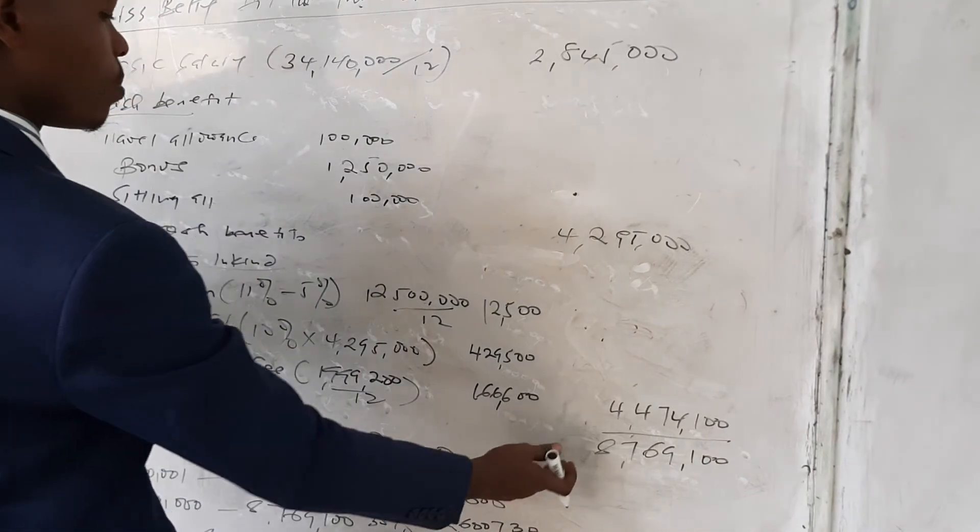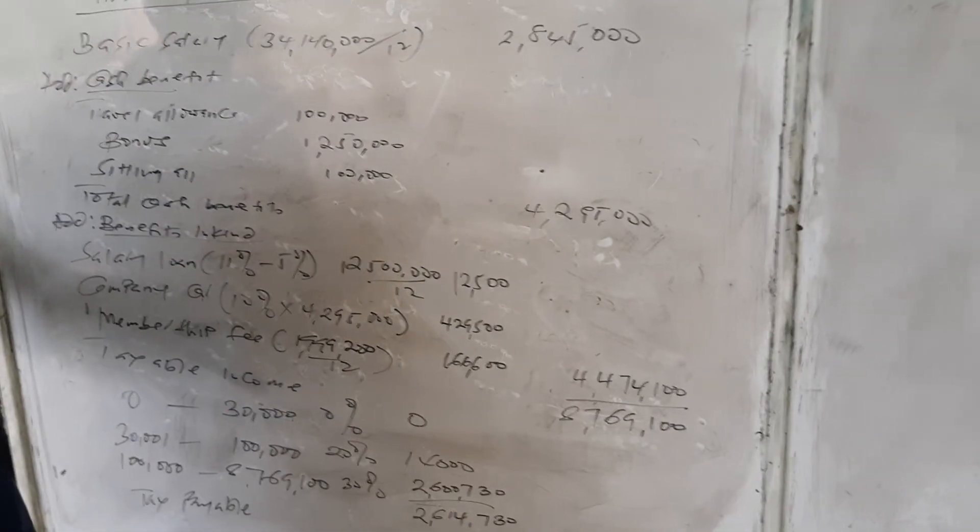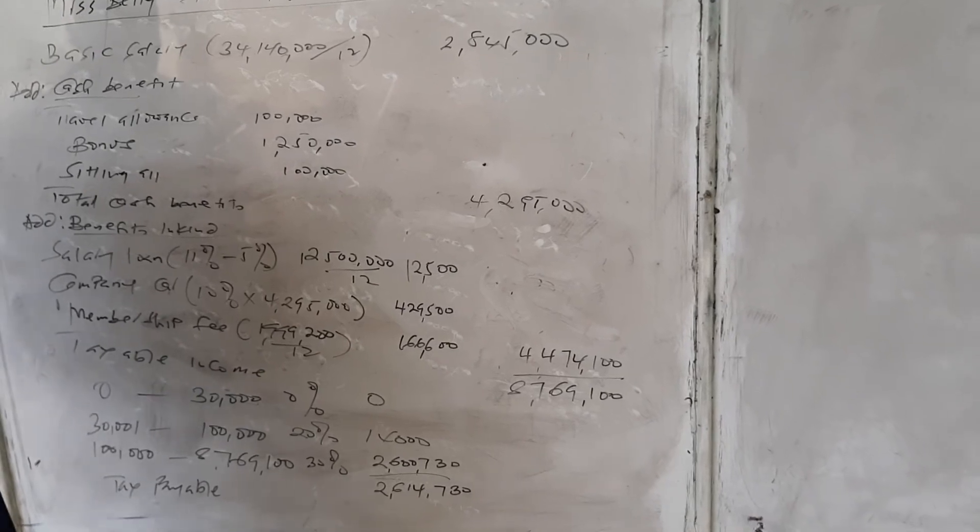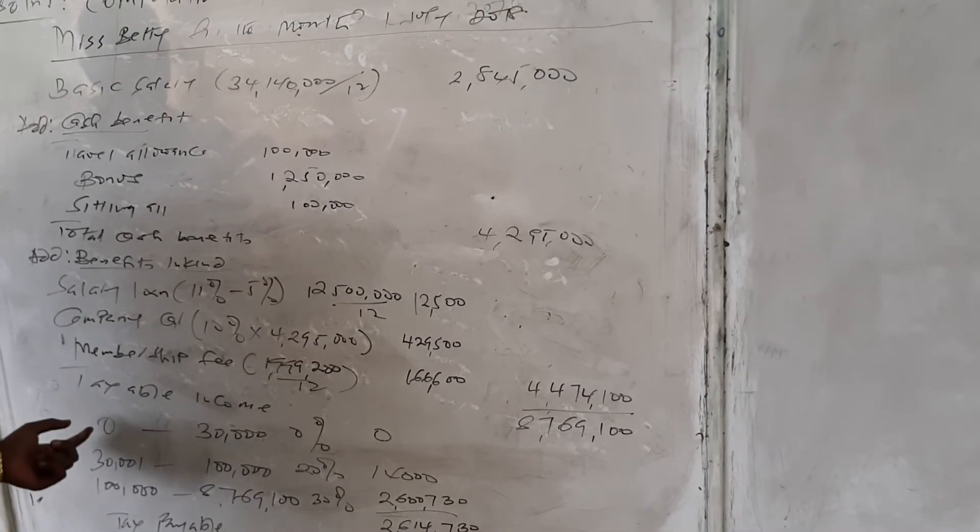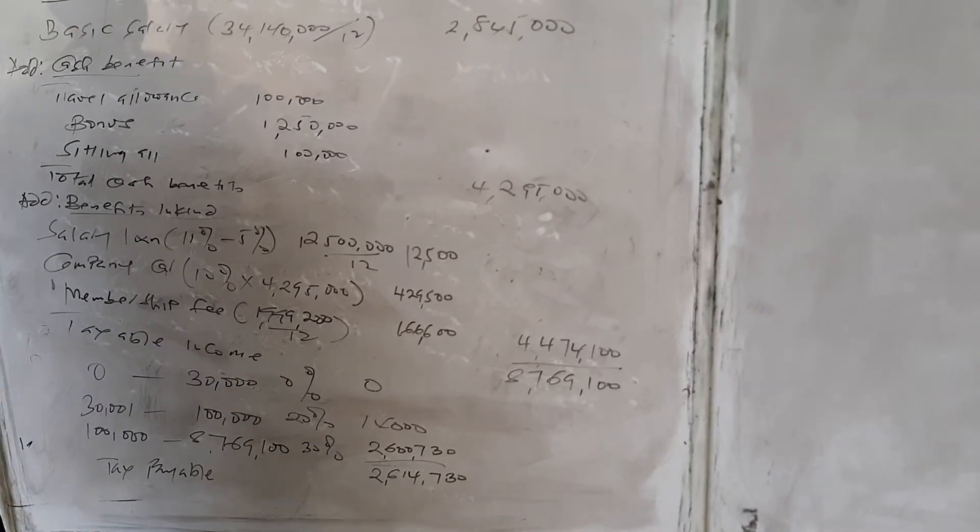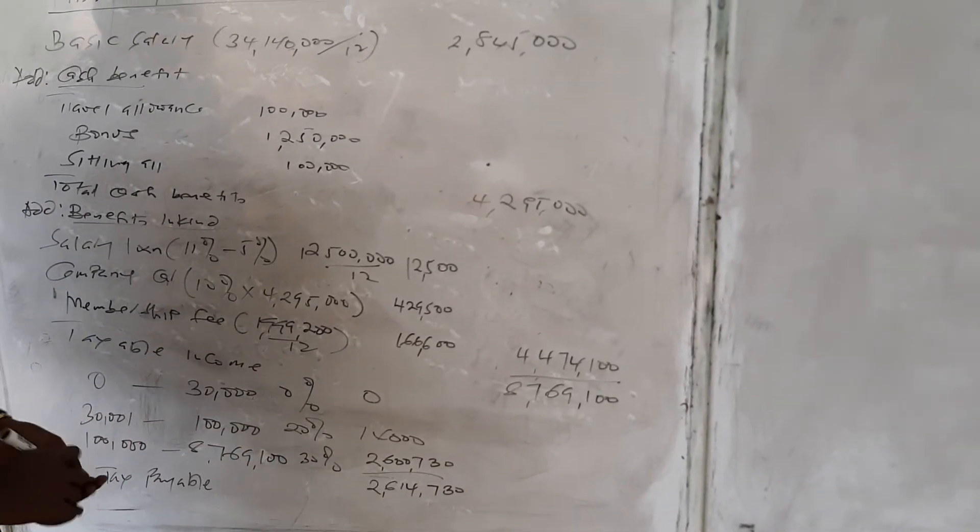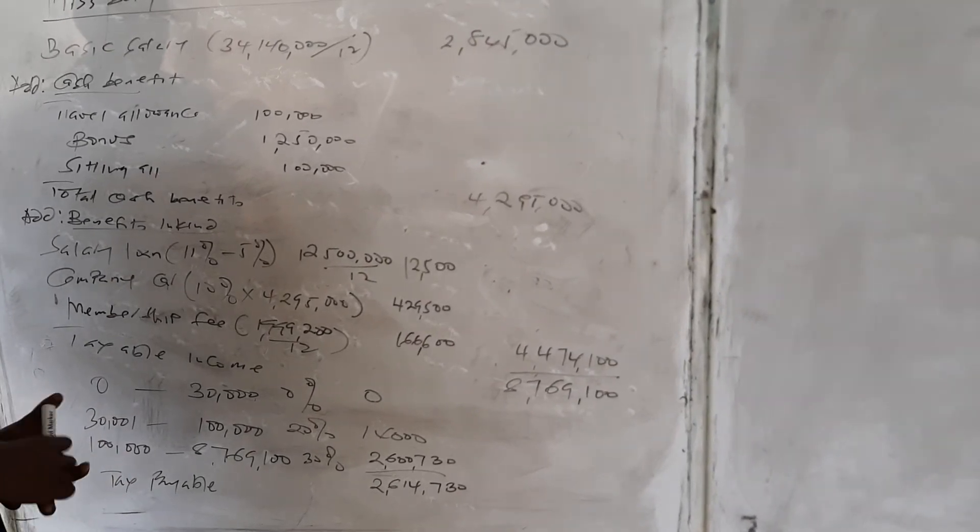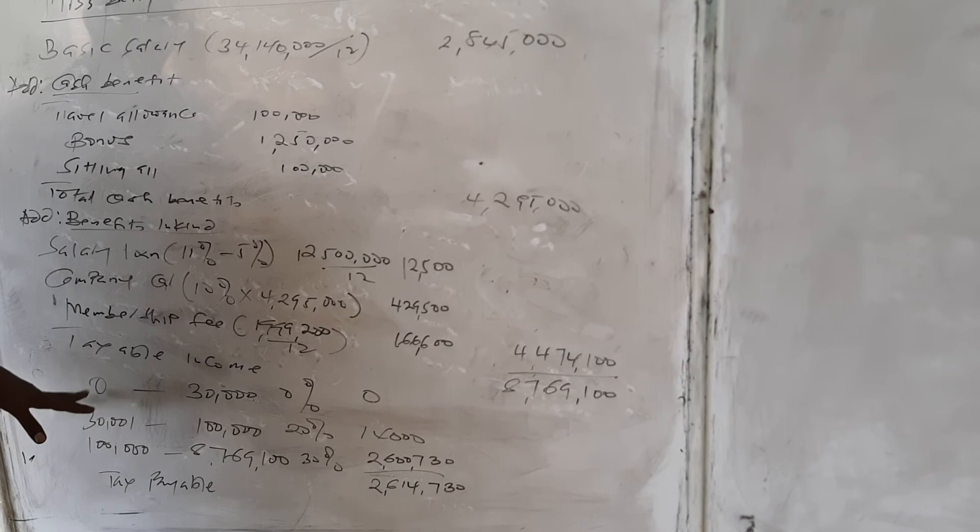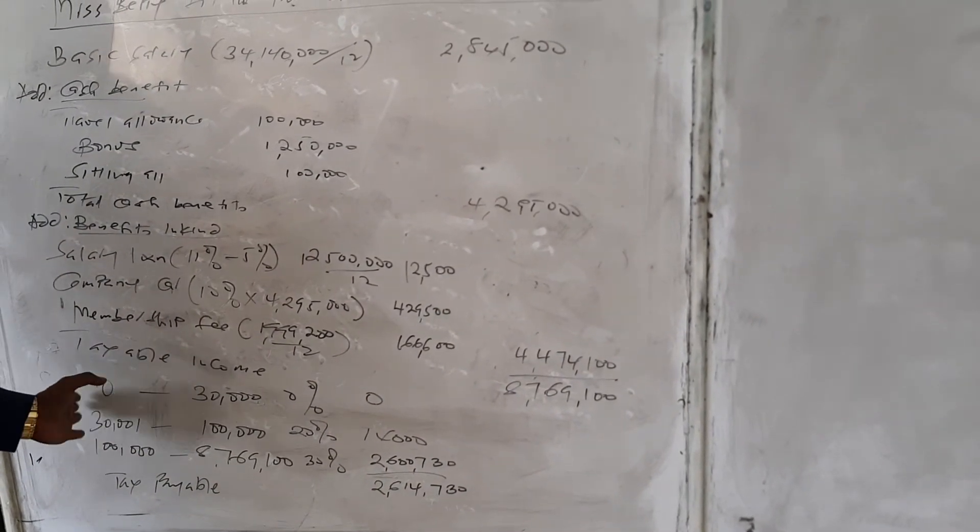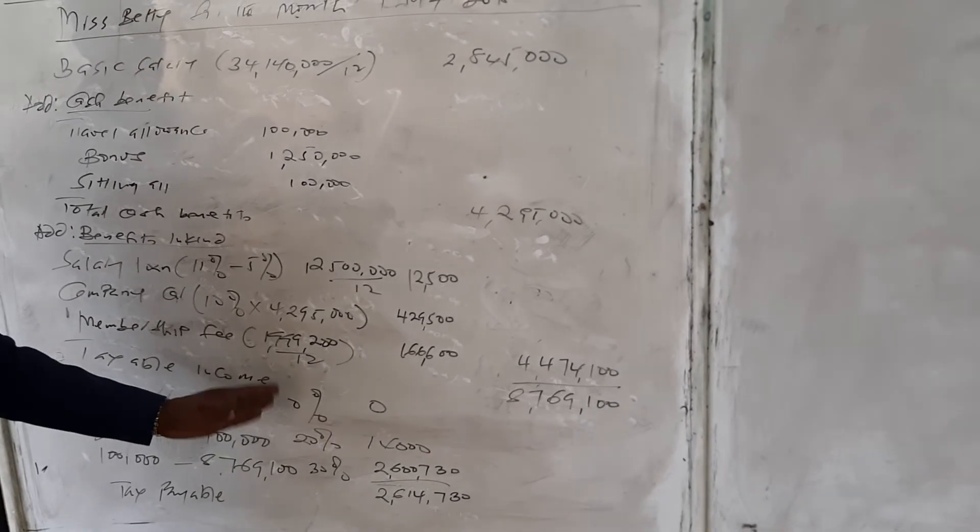I have to take the tax band to check the tax liability. We use the monthly tax band because this question was asking us to put it on a monthly basis. From 0 to 30 is 0%, from 31 to 100 is 20% equivalent to 14,000, and above 100 is 30%.